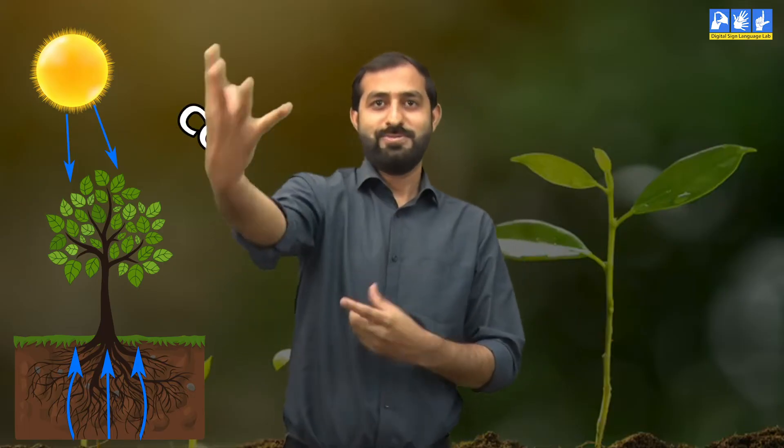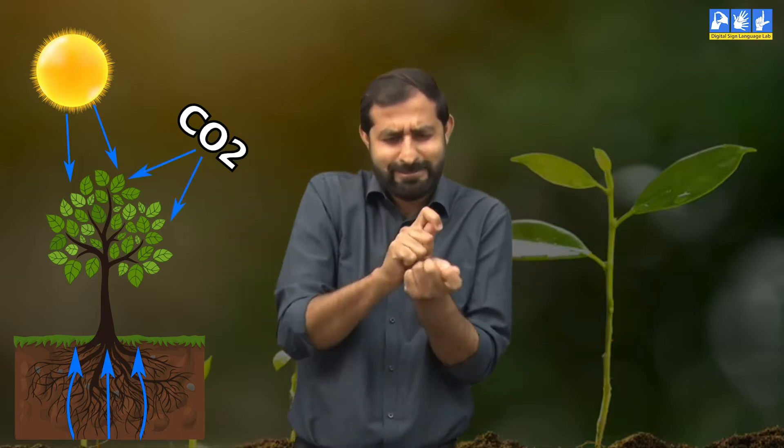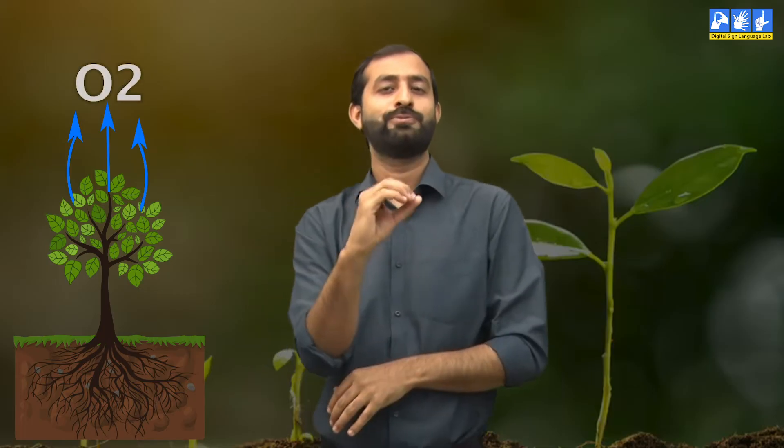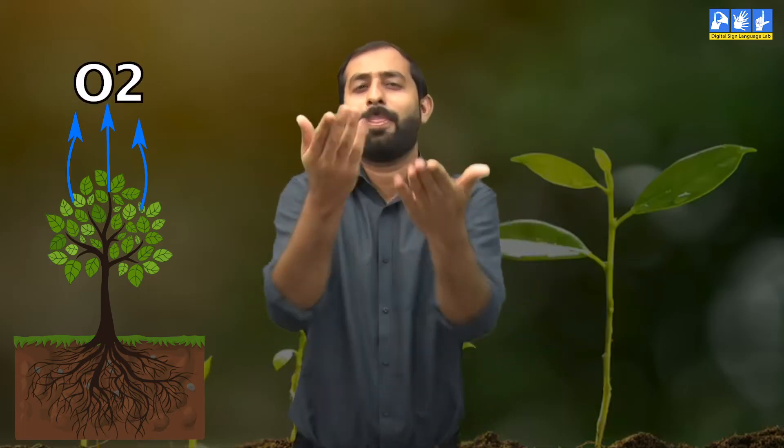Now let me tell you what happens during the photosynthesis process. During this process, first plants absorb water, sunlight and carbon dioxide from the air. And then it transforms water, sunlight and carbon dioxide into oxygen which is inhaled by living beings.